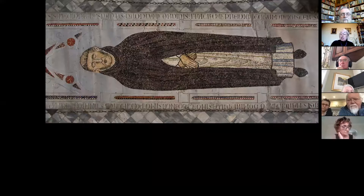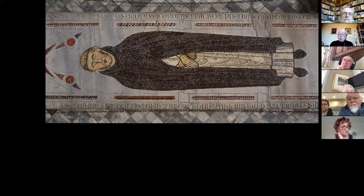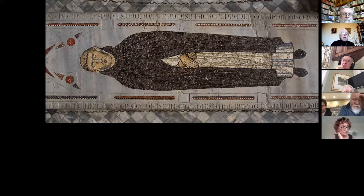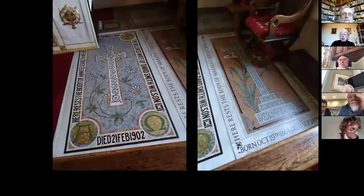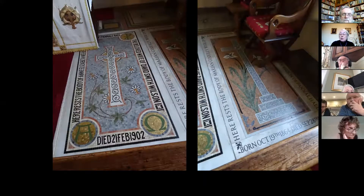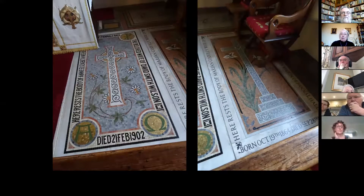This memorial slab to Father Munio de Zamora, who died in 1300 and was one time master of the Order of Preachers, is in the Basilica of Santa Sabina in Rome. Set into the floor, it makes use of mosaic and opus sectile to make a very striking impression. Much later but hardly less impressive are these beautiful mosaic and marble grave covers in the sanctuary of St Robert's Church, Pannal — I don't know how many of you have actually gone to look at them, but they are really rather lovely.